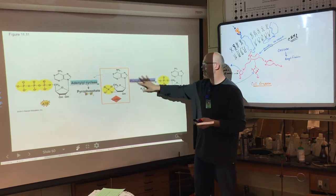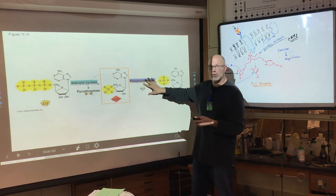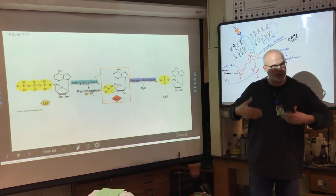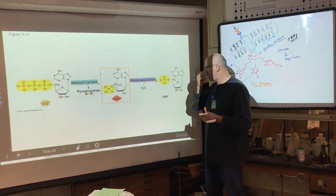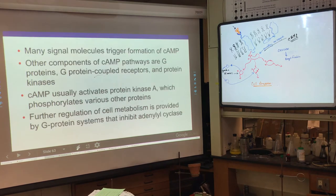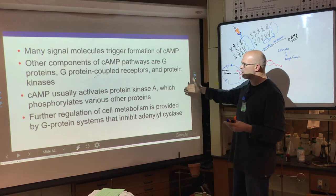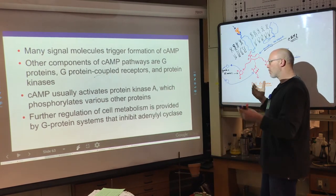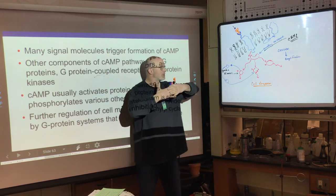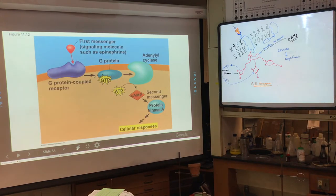Caffeine blocks phosphodiesterase — that's why caffeine stimulates you. We naturally produce epinephrine from our own emotions, and blocking phosphodiesterase keeps cyclic AMP active, creating the same cellular responses. Many signal molecules trigger the formation of cyclic AMP. G-proteins activate protein kinases, and there's further regulation of cell metabolism. There are all kinds of regulation and interwoven dependence among reactions — you can't have runaway on and off switches.